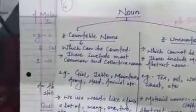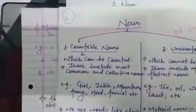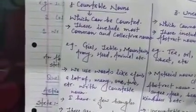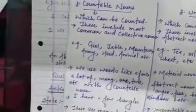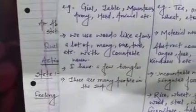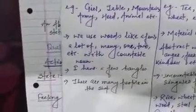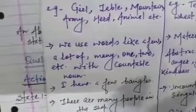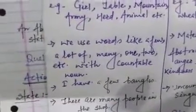Countable noun — as it is clear even from the name — is that which can be counted. Generally, common noun and collective noun come under countable noun. For example: girl, table, mountains, army, animal, etc. Before a countable noun you can use words like: a few, a lot of, many, one, two, etc. For example: 'I have a few bangles', 'there are many people in the shop'. So before a countable noun we can use: a few, a lot of, many, one, two, etc.